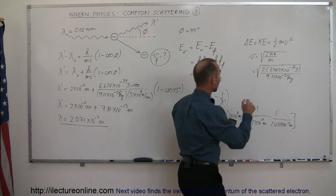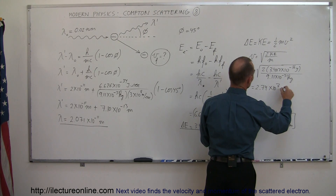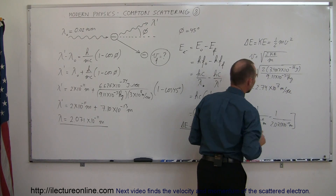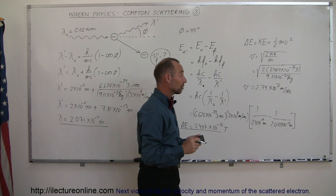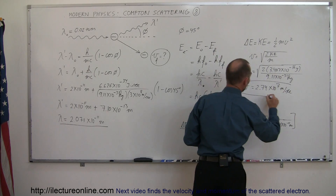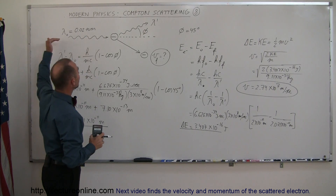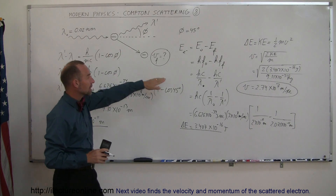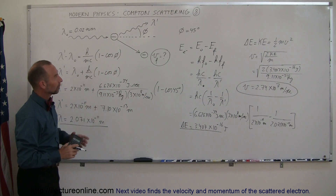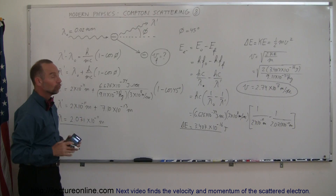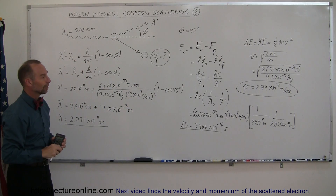That gives us 2.74×10⁷ meters per second — quite fast. That's almost 10% of the speed of light, since the speed of light is 3×10⁸ m/s. However, since it's less than 10%, we can assume this to be somewhat non-relativistic. So this electron, having been hit by a photon of this wavelength scattered at 45 degrees, gained a speed of almost 10% the speed of light. That's how you use Compton scattering to find the velocity of an electron hit by a high-energy photon.